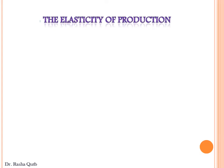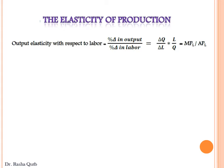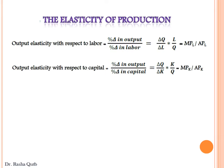Turning to the elasticity of production — called output elasticity — it is the percentage change in output divided by the percentage change in inputs used. With two factors — labor and capital — we have output elasticity with respect to labor, which equals the marginal productivity of labor times the reciprocal of the average product of labor, and output elasticity with respect to capital, which equals the marginal productivity of capital times the reciprocal of the average product of capital.